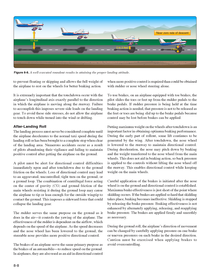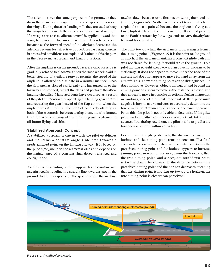Maximum brake effectiveness is just short of the point where skidding occurs. If the brakes are applied so hard that skidding takes place, braking becomes ineffective. Skidding is stopped by releasing brake pressure. Braking effectiveness is not enhanced by alternately applying, releasing, and reapplying brake pressure—the brakes are applied firmly and smoothly as necessary. During the ground roll, the airplane's direction of movement can be changed by carefully applying pressure on one brake or uneven pressures on each brake in the desired direction. Caution must be exercised when applying brakes to avoid over-controlling.